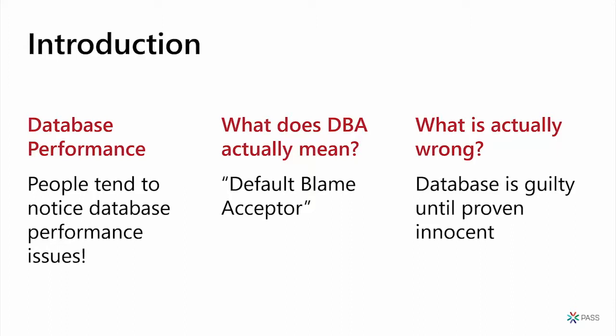Anybody who's been a DBA for any amount of time knows that if something's wrong with your database, people tend to notice pretty quickly. And what does DBA actually mean? It's 'Default Blame Acceptor.' I got tired when I was a production DBA — if the website or the application was slowing down, the database was always guilty until proven innocent. People would come up and say 'what's wrong with the database?' They always assume that's the problem. Maybe it is, maybe it isn't. I wanted a way to find out quickly, and that's literally why I came up with these.